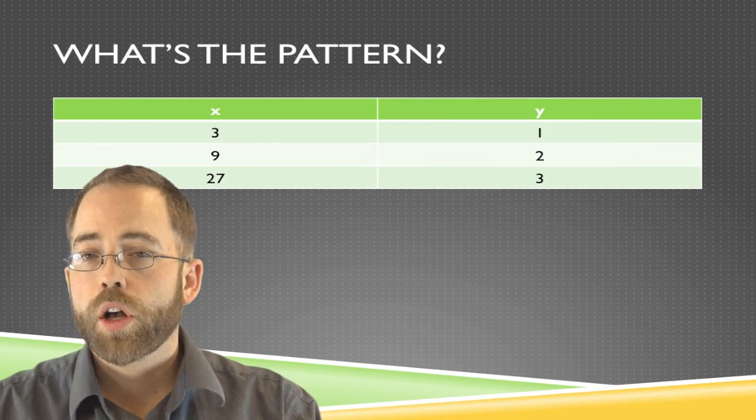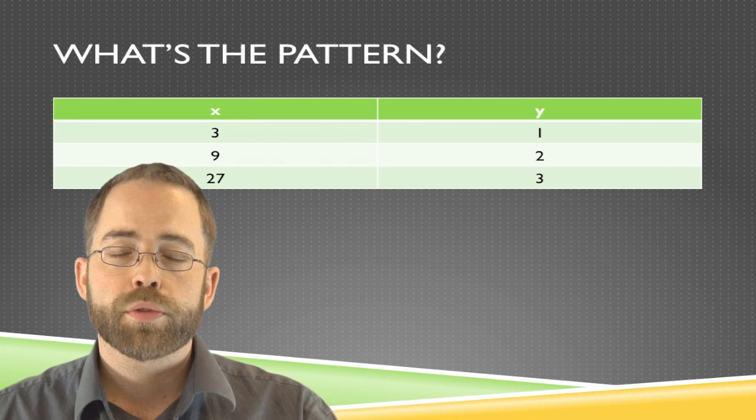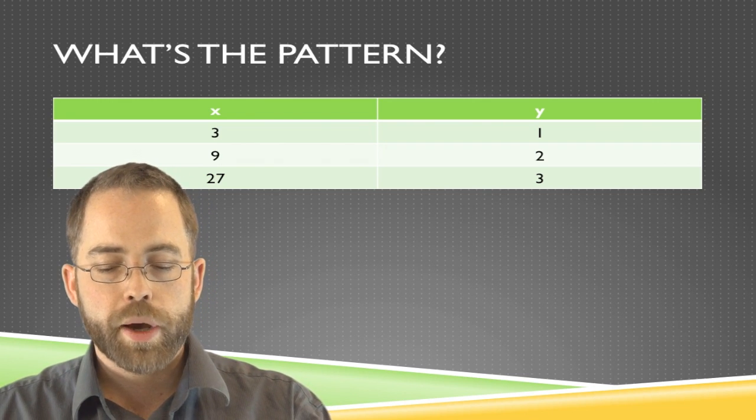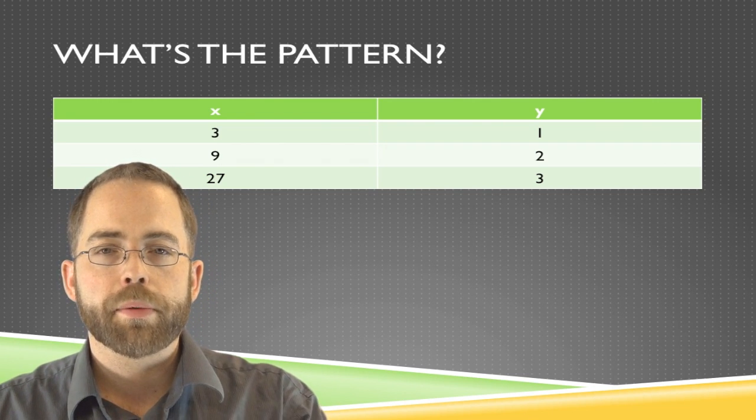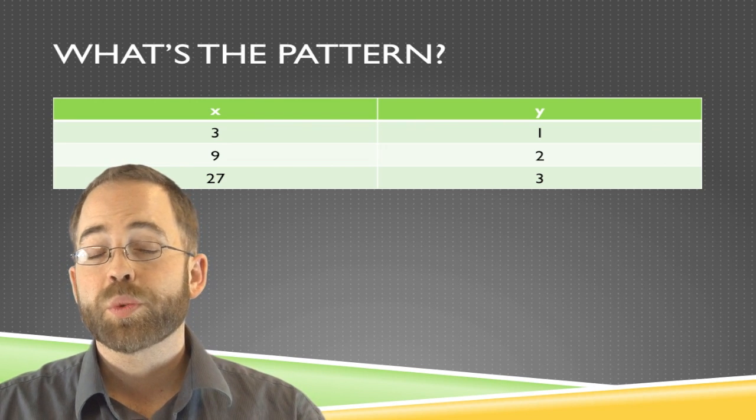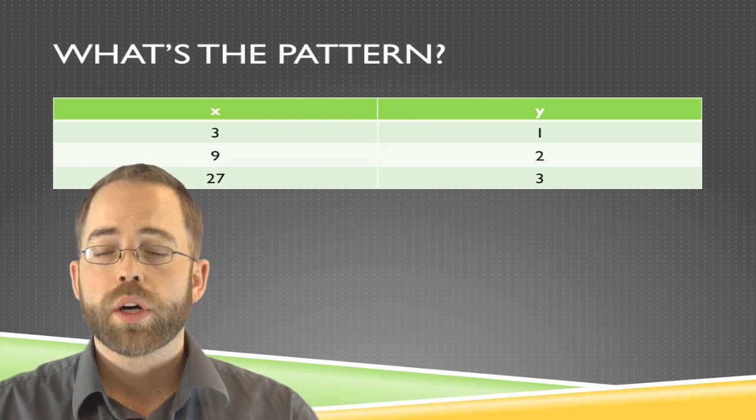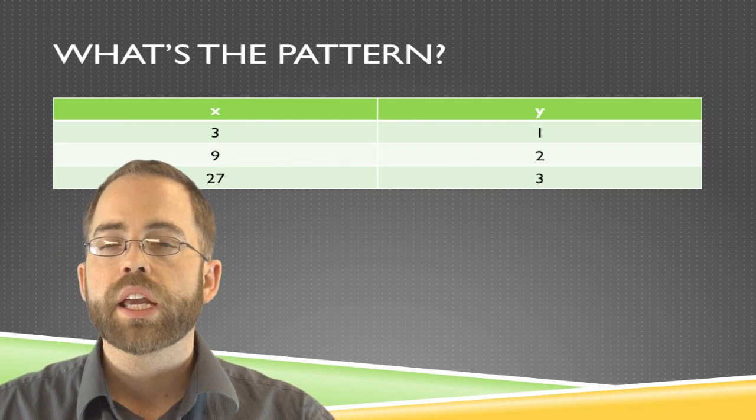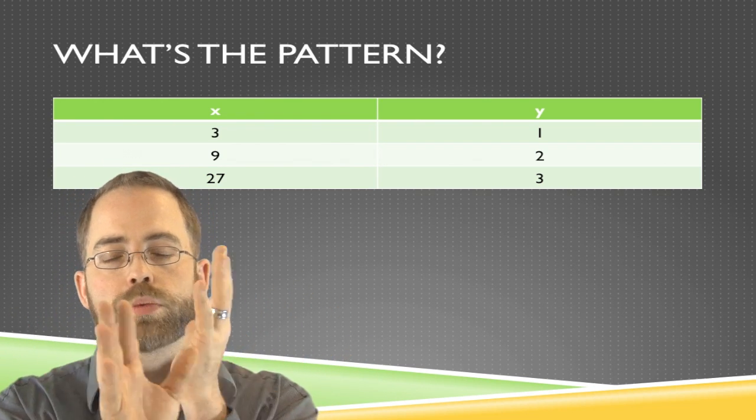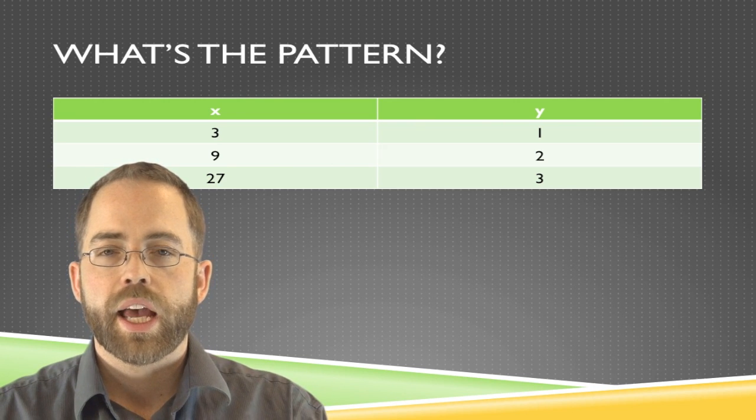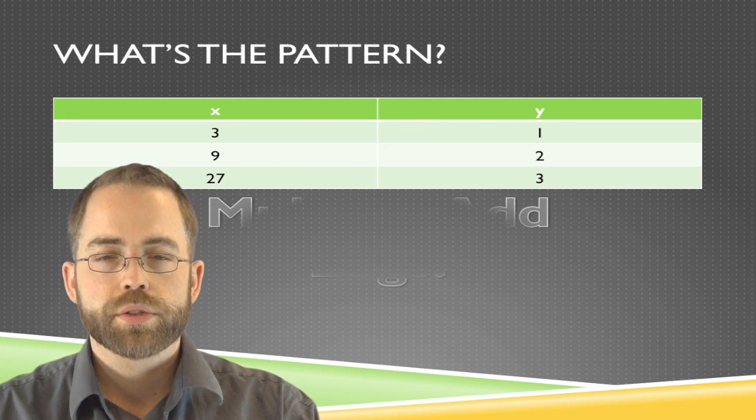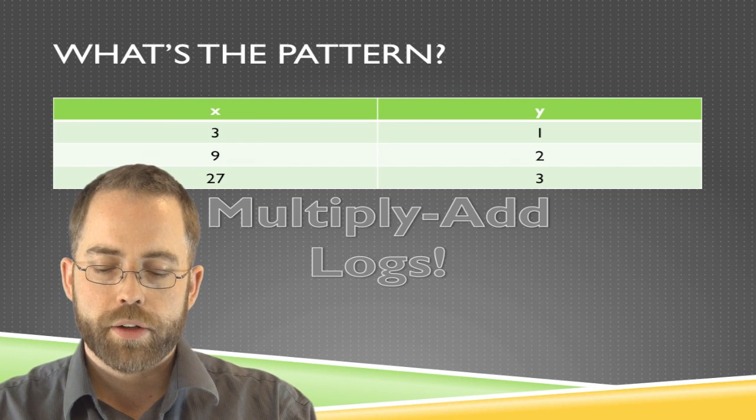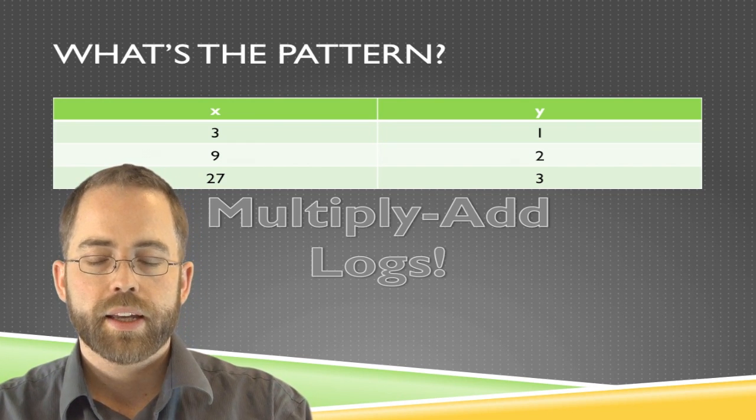You might be given the graph to look at and try to reverse engineer it that way, or you might be given the numerical pattern, the data. Since we said exponential was add multiply, what would you think the inverse would be? If we're going to swap x and y and the original is add multiply, then of course the logarithmic pattern is going to be multiply add.